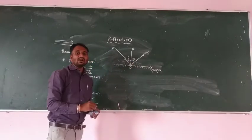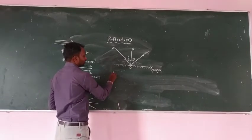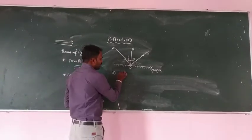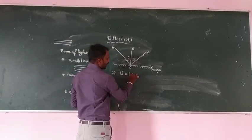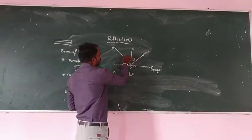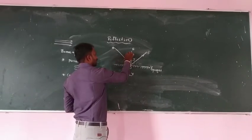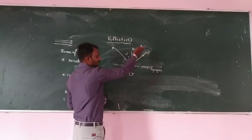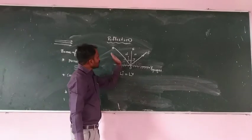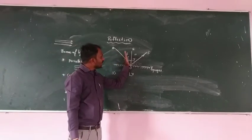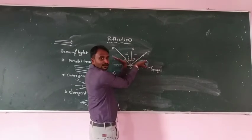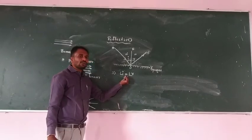The laws of reflection: the first law states that the angle of incidence is equal to the angle of reflection. For example, if the angle between the normal and the incident ray is 10 degrees, then the angle between the normal and the reflected ray is also 10 degrees. When the angle of incidence decreases, the angle of reflection also decreases; when it increases, the angle of reflection also increases.